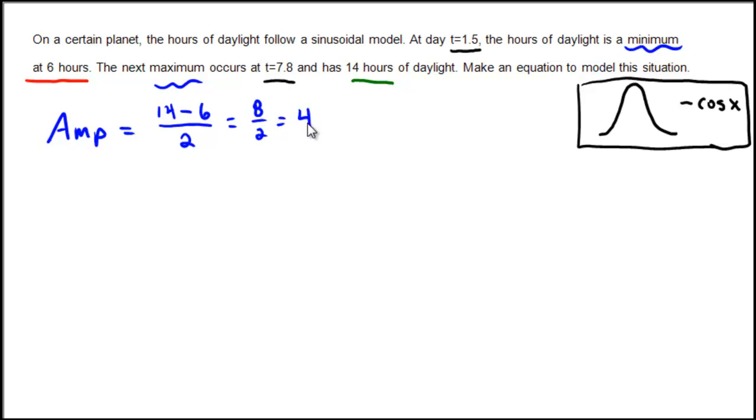Next, let's look at the period. Looking at the graph, we can see that we're going about halfway through the graph from the minimum to the maximum. In our problem, the minimum to the maximum time is half of the graph.